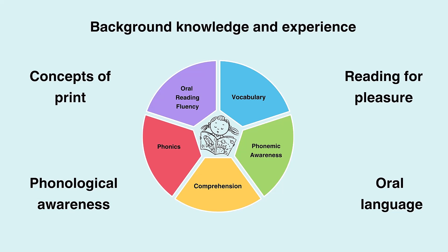Their phonological awareness, concepts of print and oral language skills, their background knowledge and experiences including their reading identity, how they see themselves as a reader, the influences of their family, peers and culture, and their motivation to read including reading for pleasure and for purpose. Researchers from many fields have concluded that children may have difficulties in any one or more of the areas needed for successful reading, and that these difficulties can change over time. Reading is complex, so it is unlikely that children will only ever experience difficulty in one specific area. Educators should prioritise a child's need and provide additional support where they feel progress will have the most impact on other components or factors.